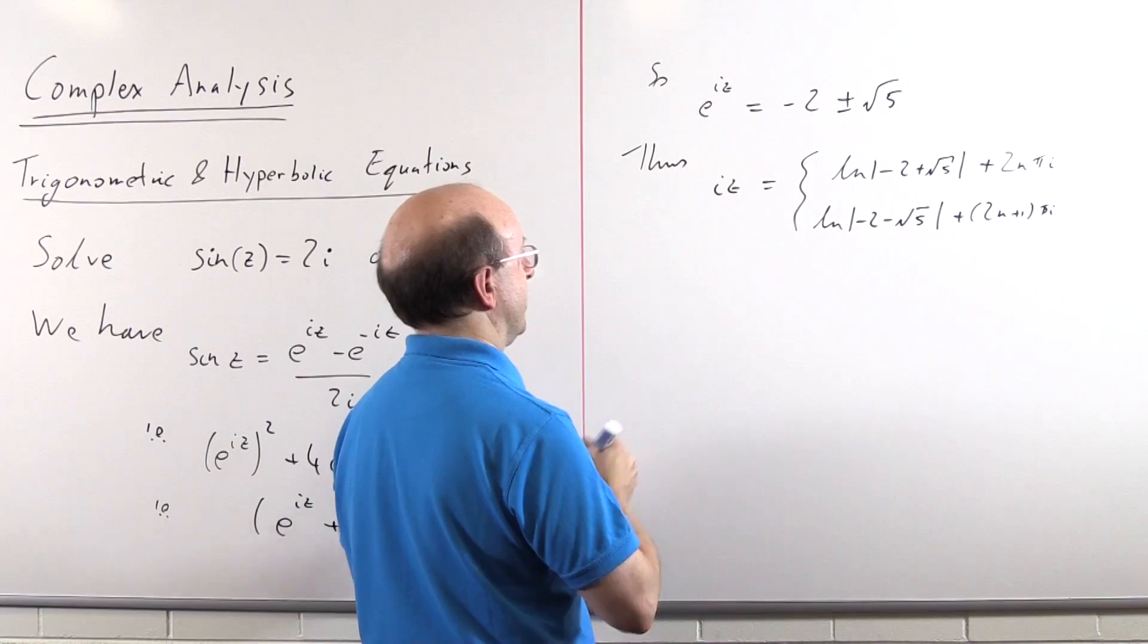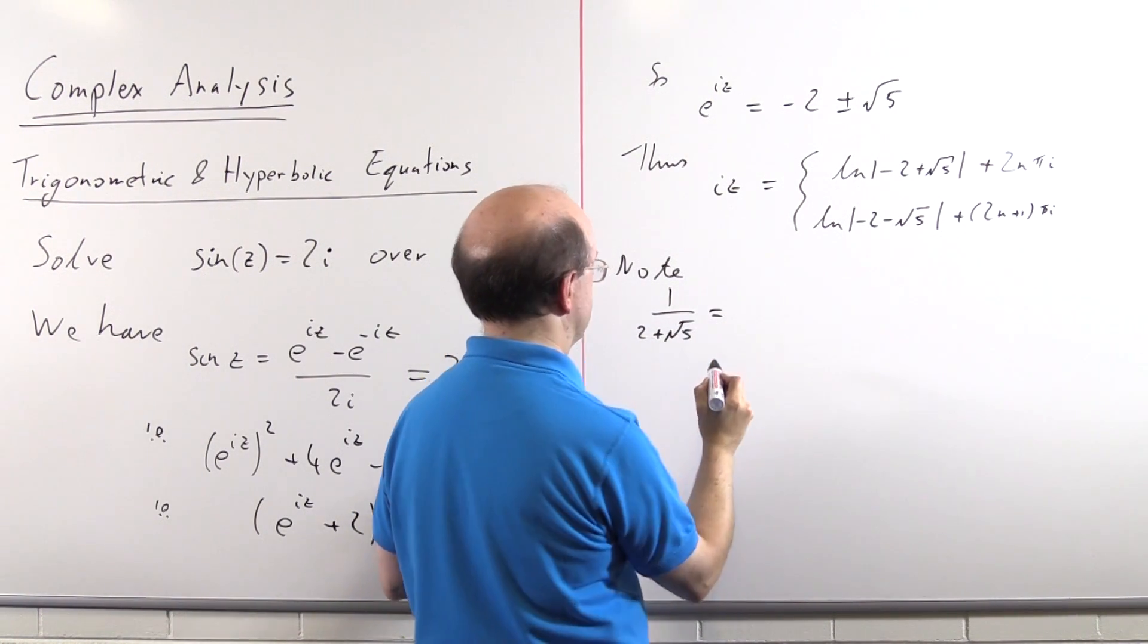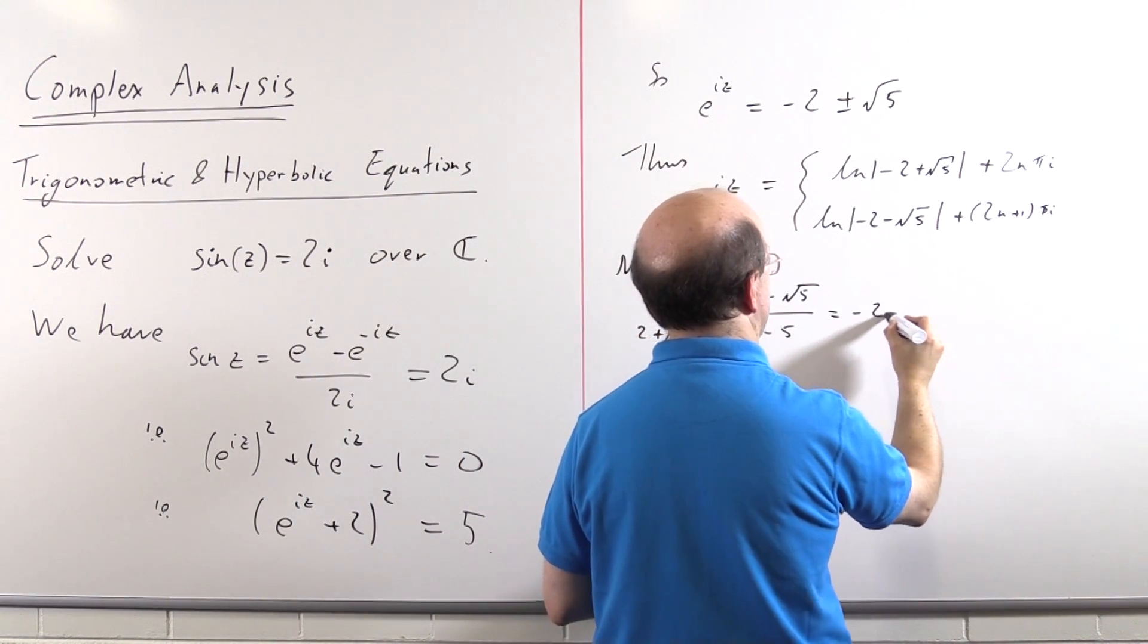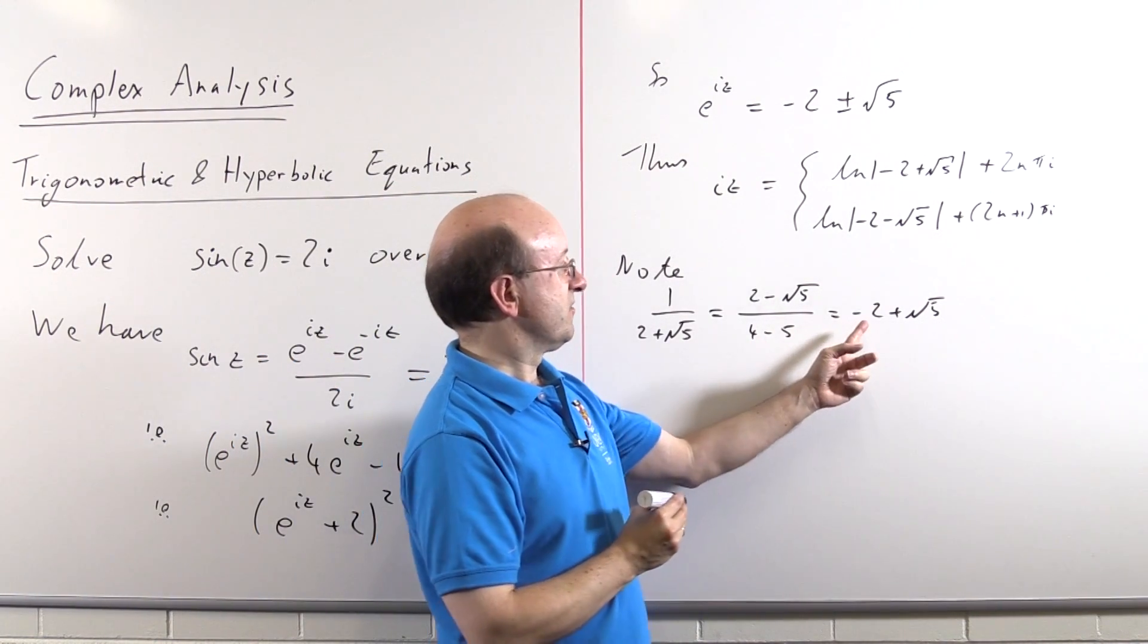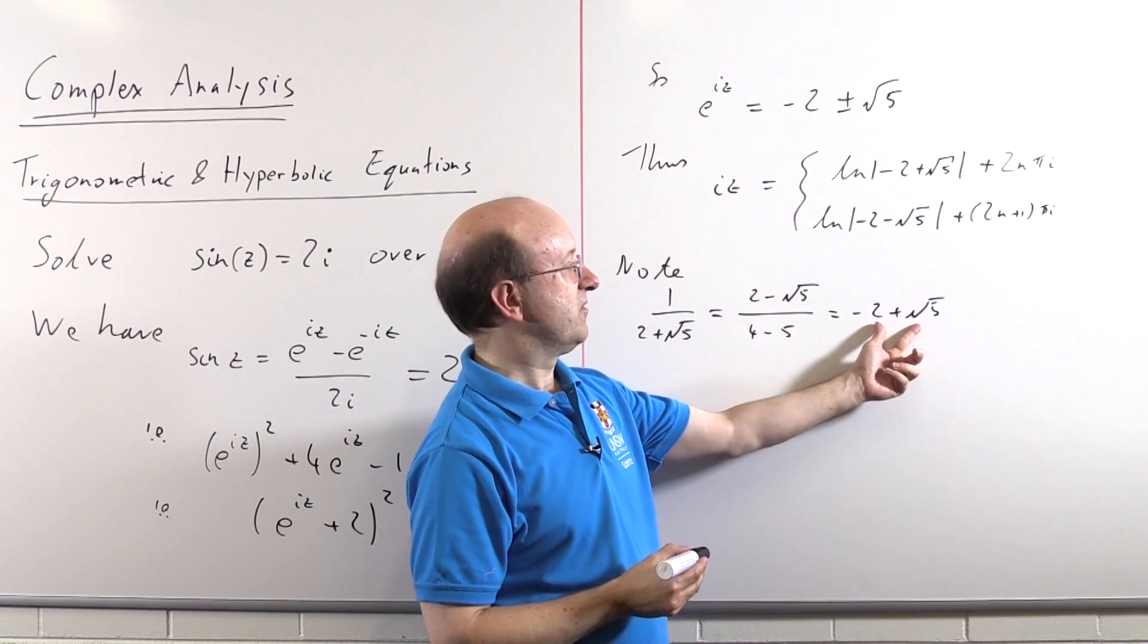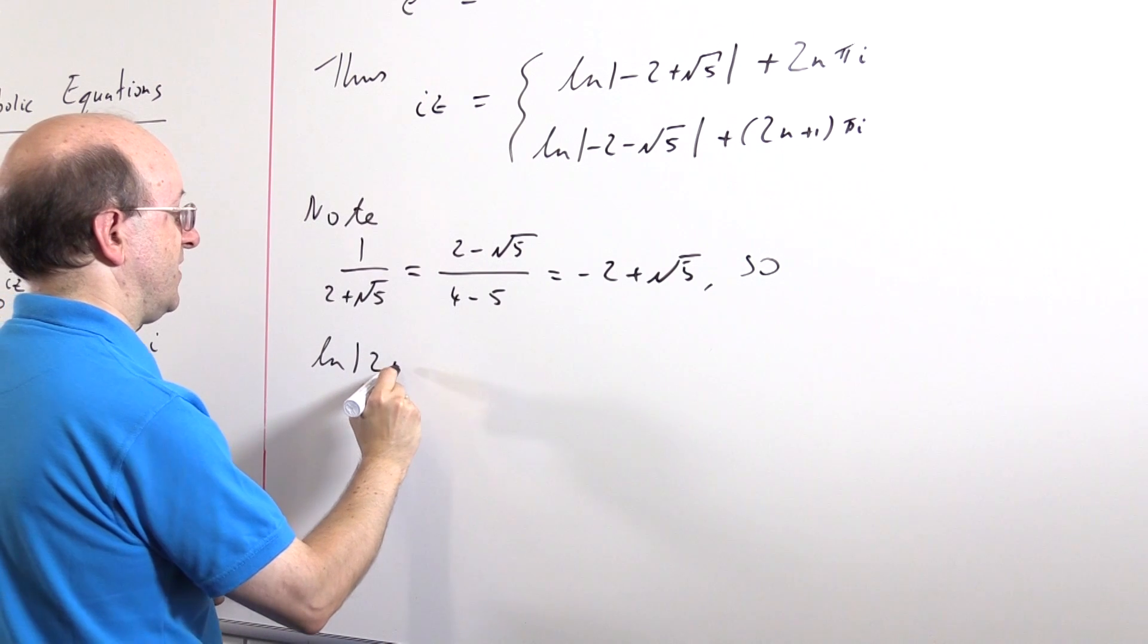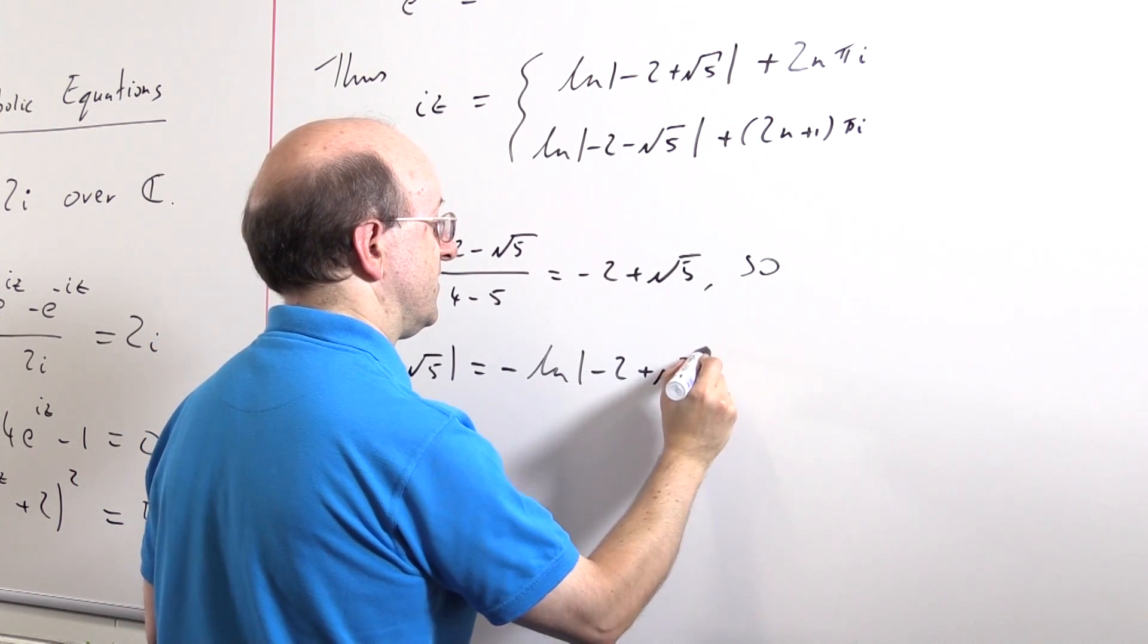Well actually it's minus that. And if you're solving any of these trig equations where you're solving trig is real or pure imaginary, almost invariably that's what will happen. So we'll say, note, 1 over 2 plus root 5 is multiplied by appropriate conjugate. And we're going to get 2 minus root 5 divided by what's going to be 4 minus 5, which is minus 2 plus root 5. And so it follows that the log of 2 plus root 5 is a negative of the log of minus 2 plus root 5.